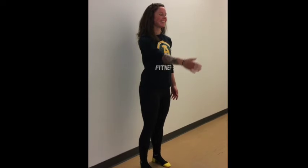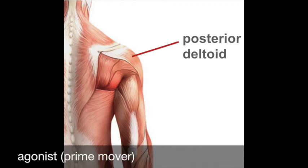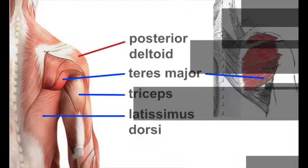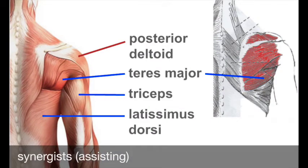Now here's shoulder extension. The arm moves back into anatomical position along a sagittal plane. The agonist or prime mover of shoulder extension is the posterior deltoid, or back head of the deltoid. This makes sense because the posterior deltoid attaches to the scapula and humerus, crossing over the back of the shoulder joint. The muscle generates force and pulls on bones. Synergists or assisting muscles are the latissimus dorsi, teres major — which is deep to the latissimus dorsi — and the triceps. That's shoulder flexion and extension. Let's move on.